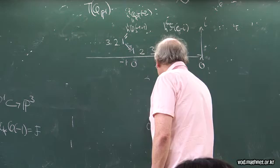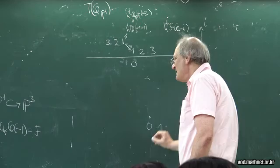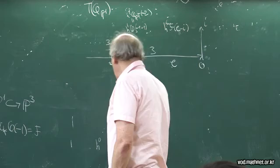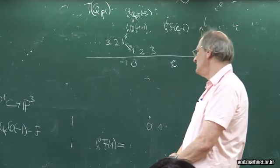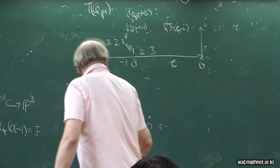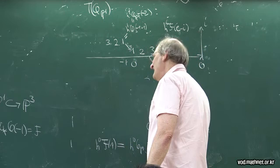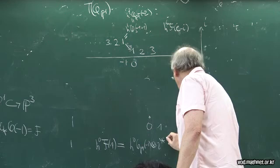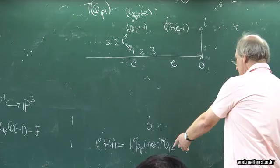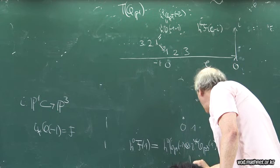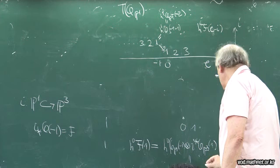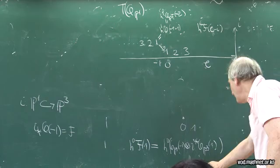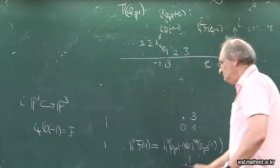And then I can compute. So in degree 0, we have nothing. h0 of that is nothing. In degree 1, we have h0 of this twisted by 1, which h0 of f of 1, which is going to be, well, I have to think about what this 1 is. This is h0 of p1 of minus 1 tensed yota upper star of O of p3 of 1.